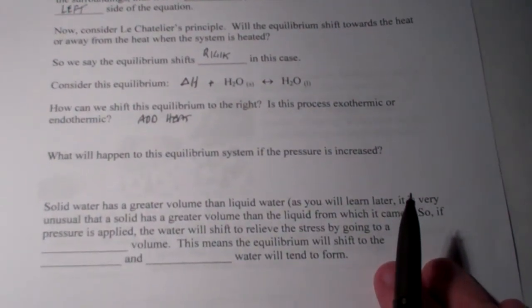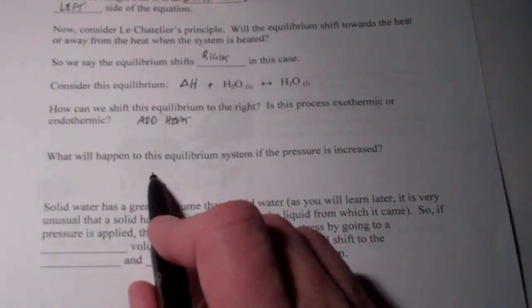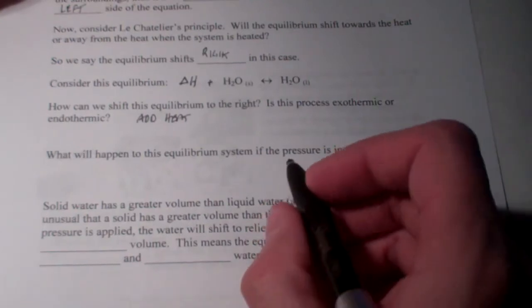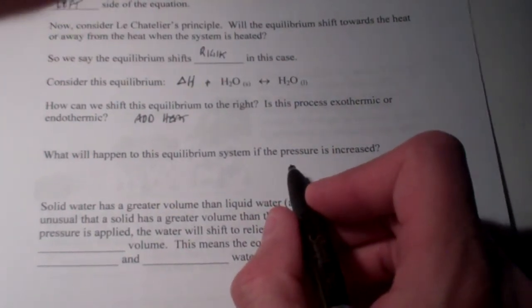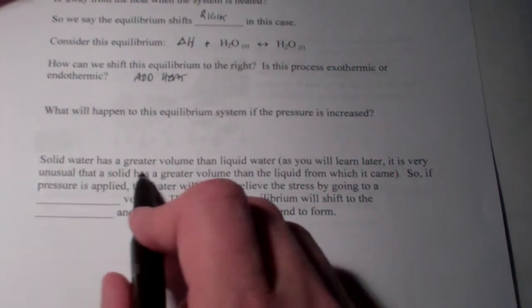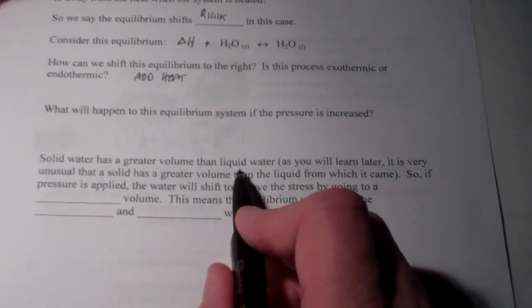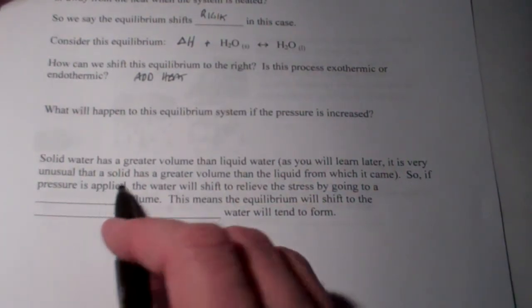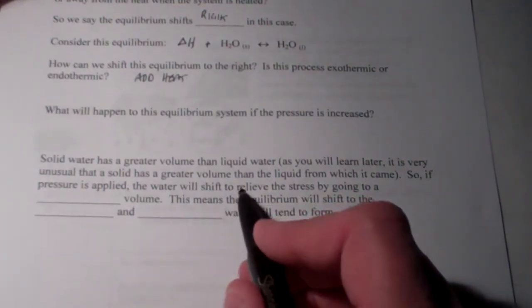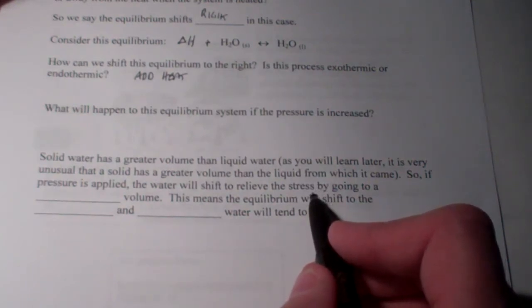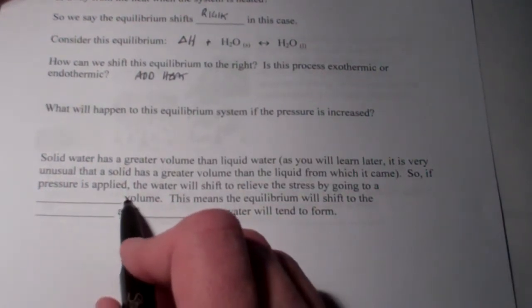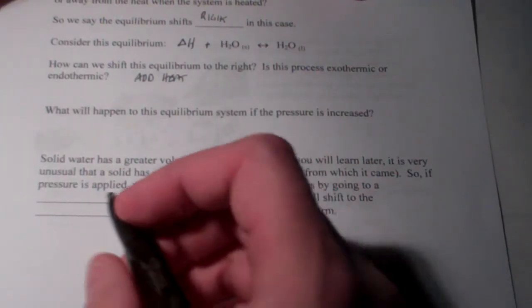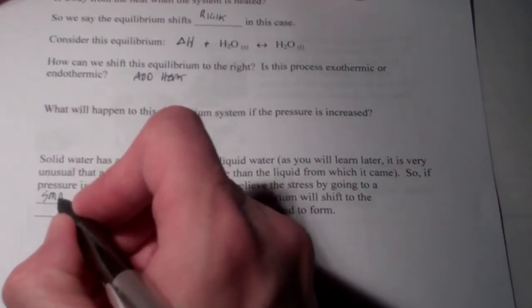I think the more interesting question is this. What will happen to this equilibrium system if pressure is increased? It turns out that solid water has a greater volume than liquid water. We're going to learn about that later. And it's sort of unusual that a solid actually has a greater volume than the liquid from which it came. So, if pressure is applied to this system, the water will shift to relieve the stress by going to a smaller volume.